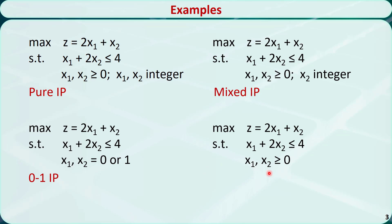This is the last example. The only difference between this one and the first one is that there is no integer requirement for the decision variables. This is a linear programming problem because both the objective function and the constraints are linear. It is called the linear programming relaxation of the first three examples.